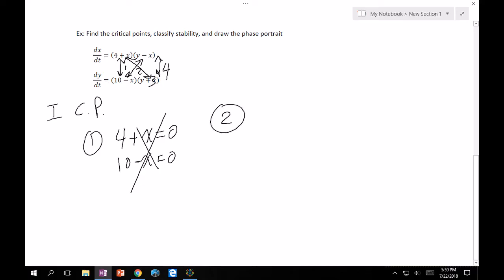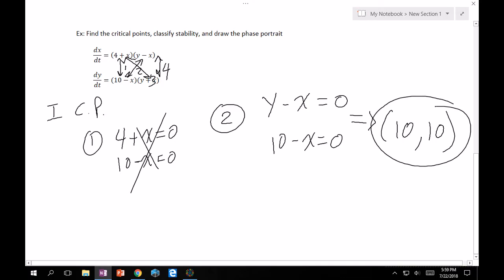Case 2 is y minus x equals 0 and 10 minus x equals 0. Clearly from the bottom, x equals 10, which means y equals 10 on top. That's our first critical point. Case 3 is 4 plus x equals 0 and y plus x equals 0. From the top, x equals negative 4, which means y equals positive 4.